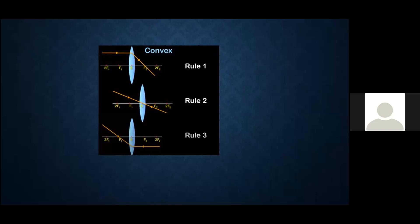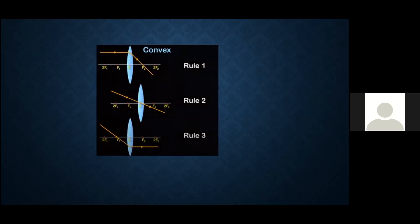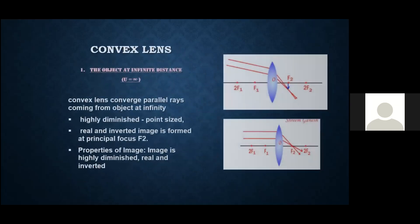The ray passing through the optical center will emerge without any deviation. And rule three: a ray passing through the focus — after refraction — it becomes parallel to the principal axis. So we need to keep this in mind. And now I'll start our cases.